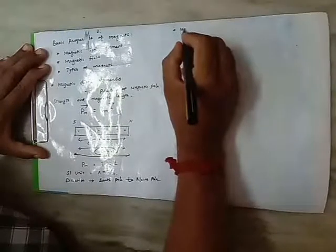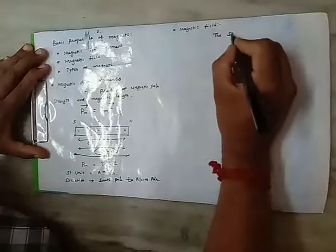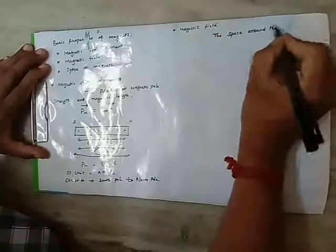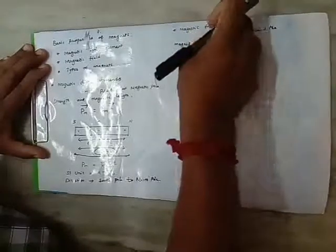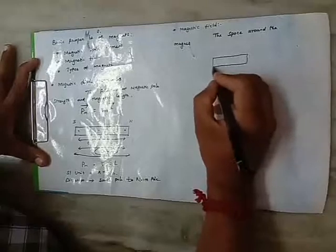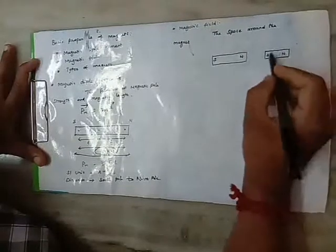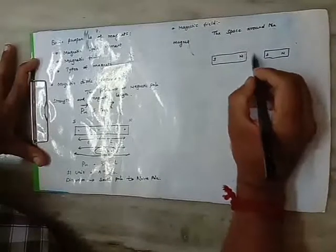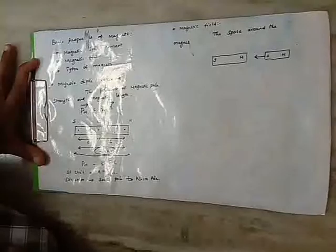Next topic is magnetic field. What is the magnetic field? The magnetic field means the space around the magnet having magnetic force. To explain this, we consider one magnet with a south pole and a north pole. We take another magnetic material and move it towards this magnet. When it reaches a particular distance, the north pole attracts the south pole. Due to the magnetic field, it attracts another magnet.